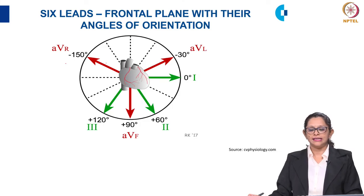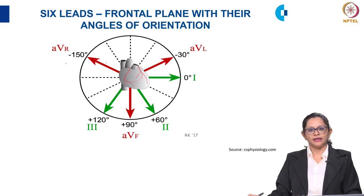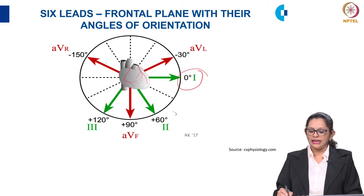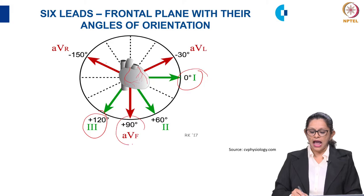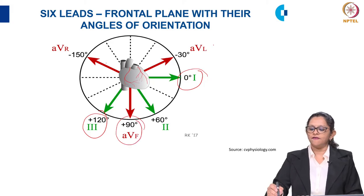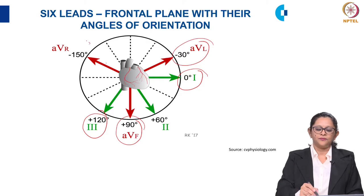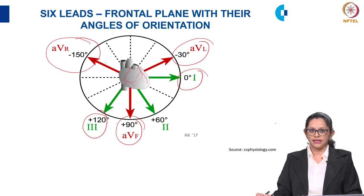This picture shows all six leads in the frontal plane with their angles of orientation. It is necessary to memorize these angles to determine the axis of ECG. To re-emphasize: Lead I is at 0 degrees, Lead II at plus 60 degrees, Lead III at plus 120 degrees, AVF at plus 90 degrees, AVL at minus 30 degrees, and AVR at minus 150 degrees.